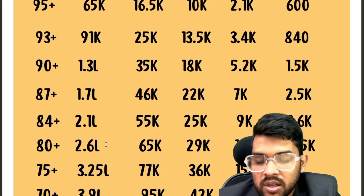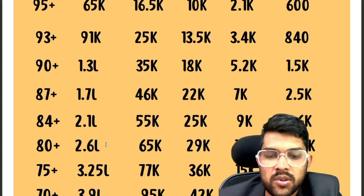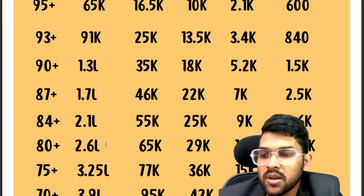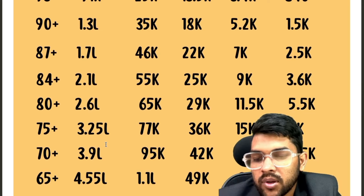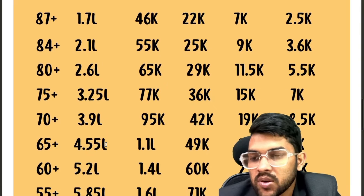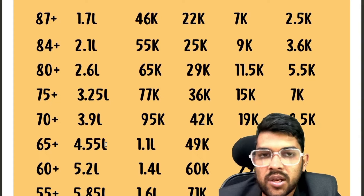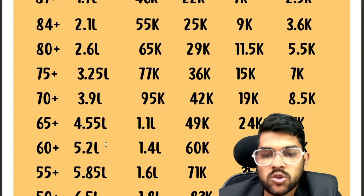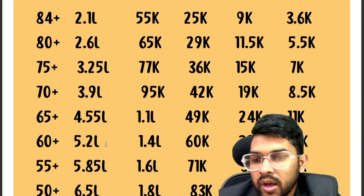For 47.5 percentile: General 3.25 lakh, OBC 77000, EWS 36000, SC 15000, ST 7000. For 47.0: General 3.9 lakh, OBC 95000, EWS 42000. For 65 percentile: General 4.55 lakh, OBC 1.1 lakh, EWS 49000. SC and ST values can be checked in the last two columns.